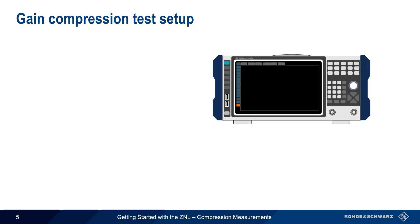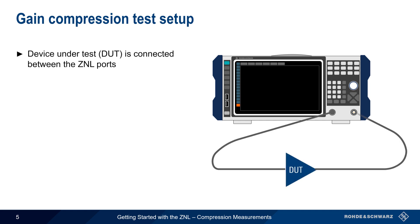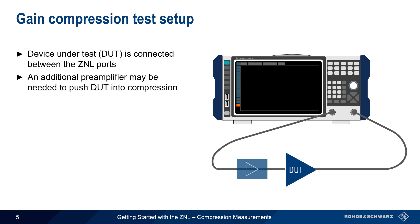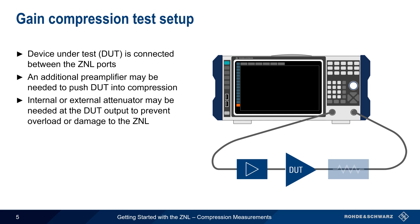The basic test setup for compression measurements is very straightforward. The device under test, or DUT, is simply connected between the two ports of the ZNL. If the maximum output power of the ZNL is not sufficient to push the device into compression, an additional preamplifier may be needed between the ZNL output and the DUT input. At the DUT output, an external attenuator, or the ZNL's optional internal step attenuator, may be needed in order to prevent the ZNL from being overloaded or damaged. This is particularly true in the case of DUTs that produce a very high output power.